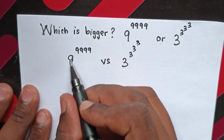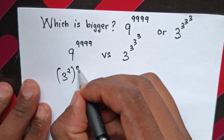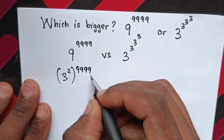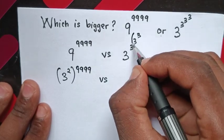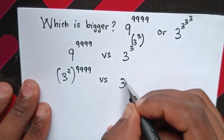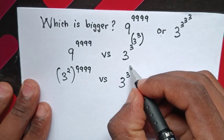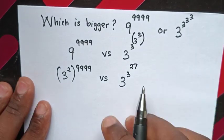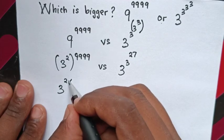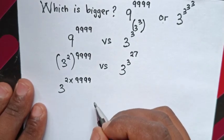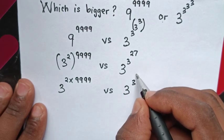From 9^9999, we rewrite 9 as 3 squared, so it becomes (3²)^9999, which equals 3^(2×9999). For the right side, 3^3^3^3, we first evaluate the last two powers: 3^3 = 27. So the right side becomes 3^3^27.